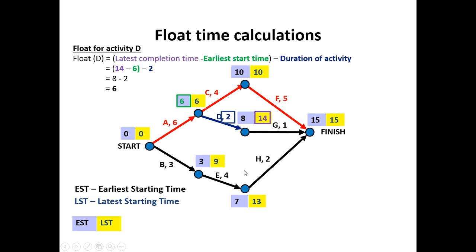Moving on. The float for activity D, it has the latest time to complete of fourteen. Subtract the earliest time to start, which is six. Fourteen take six gives me eight minutes. And from that we take away the activity time of two. So this also has a float of six minutes. Activity E has the latest completion time of thirteen and the earliest starting time of three. That gives me a difference of ten. Subtract the activity duration of four. It also has a float time of six minutes.